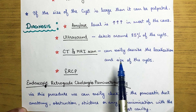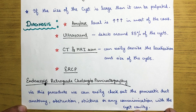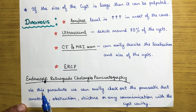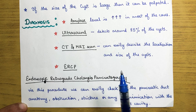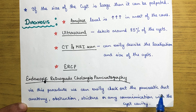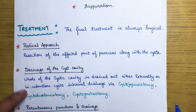CT or MRI scan can clearly describe the location and size of the cyst. Another examination is ERCP — endoscopic retrograde cholangiopancreatography. With this procedure we can check the pancreatic duct anatomy, obstruction, stricture, and whether there is any communication between the duct and the cyst cavity.